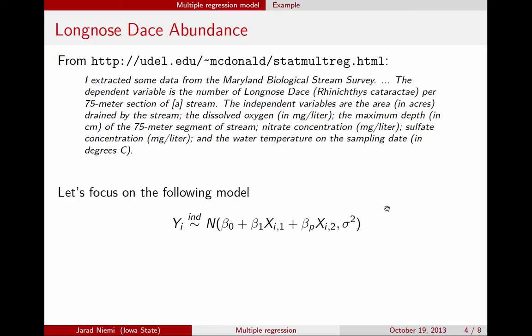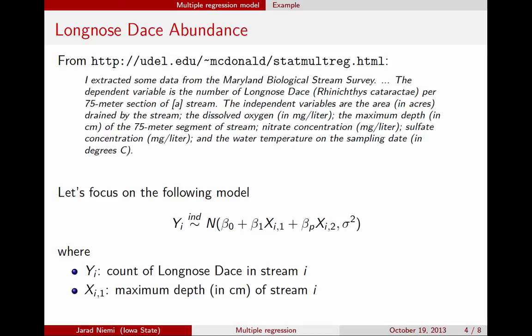This model has only two explanatory variables. yi is the count of long-nosed dace in stream i. xi1 is the maximum depth in centimeters of stream i. And xi2 is the nitrate concentration in milligrams per liter in that stream. So we're simplifying the problem to only incorporate these two possible explanatory variables.